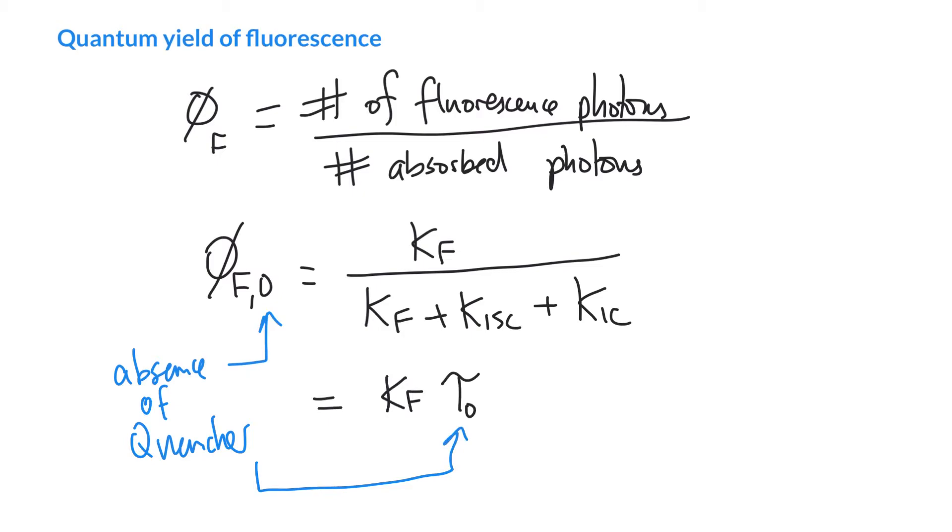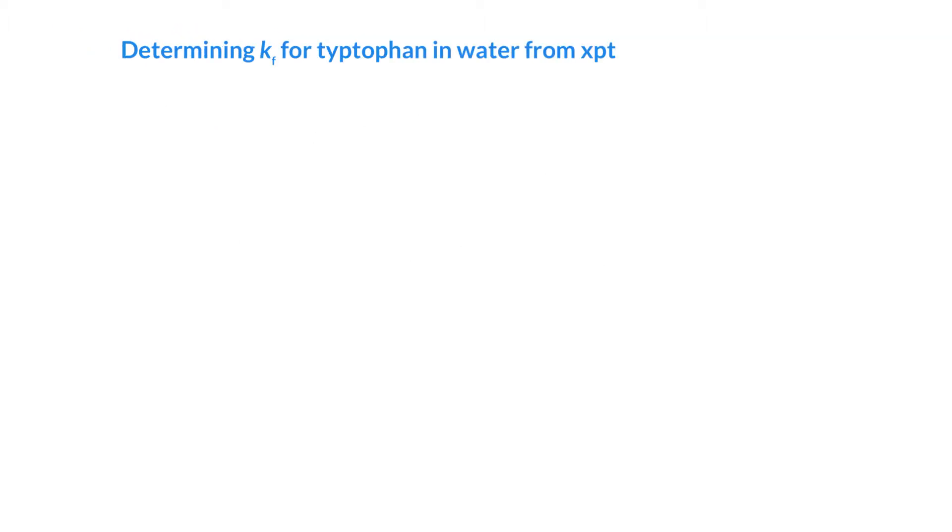So if we're interested in the rate constant for fluorescence, then we can actually go ahead and just ratio the fluorescence quantum yield by the time constant in the absence of a quencher. So kF is the fluorescence yield over tau zero. So we can determine the rate constant for fluorescence from experimental data.